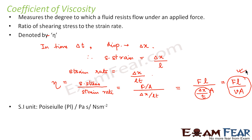The SI unit of coefficient of viscosity is Poiseuille, or Pascal-second, or Newton-second per meter square. Poiseuille is the unit named after the scientist. Pascal is the unit of stress, and since we have strain rate (which involves per unit time), the unit becomes Pascal-second. Similarly, instead of Pascal we can write it as Newton per meter square second, giving Newton per meter square second.